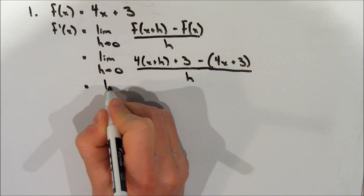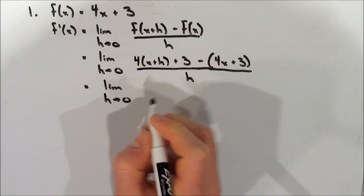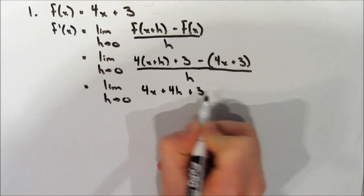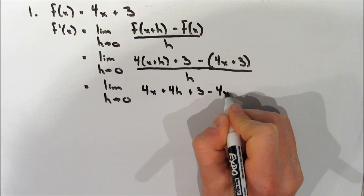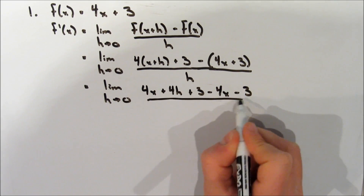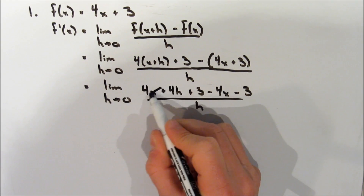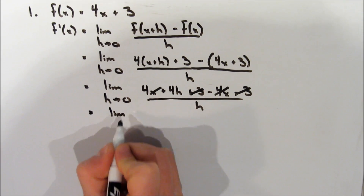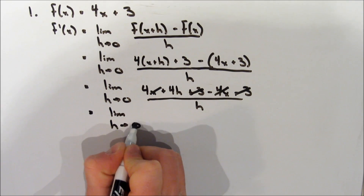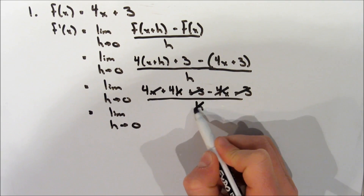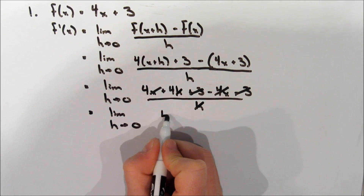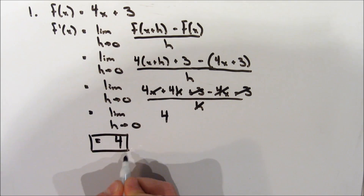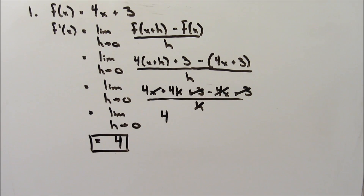Writing out the limit again, we expand the brackets to get 4x plus 4h plus 3, minus 4x minus 3, all over h. Some terms cancel: the 4x's and the 3's both cancel. We're left with the limit as h approaches 0 of 4h over h. The h's cancel, and we're left with 4. So the derivative of 4x plus 3 is simply 4.